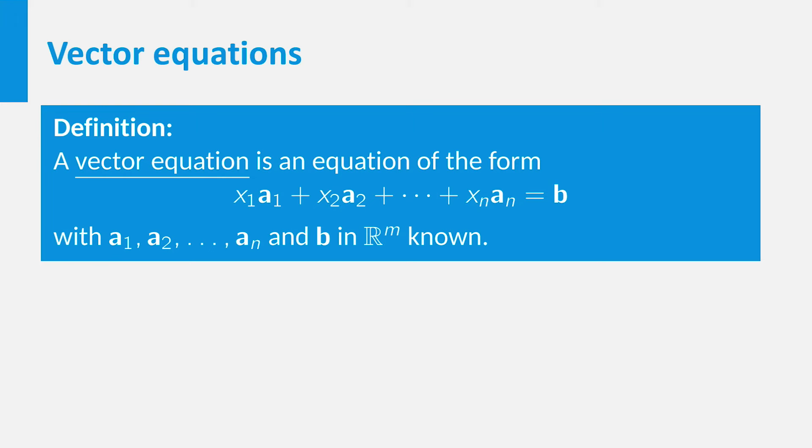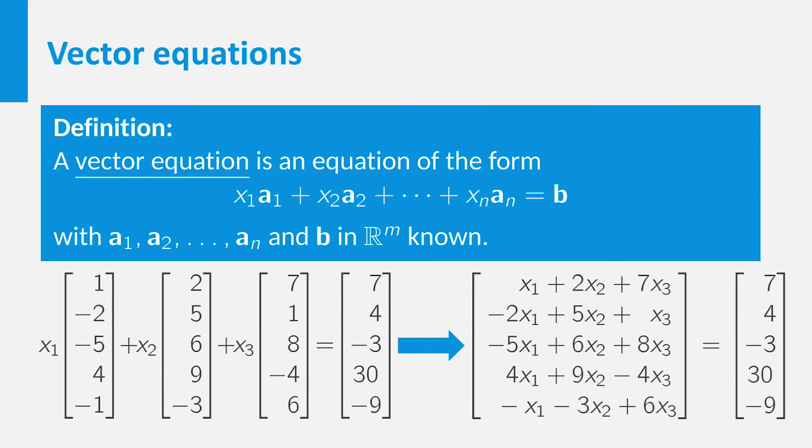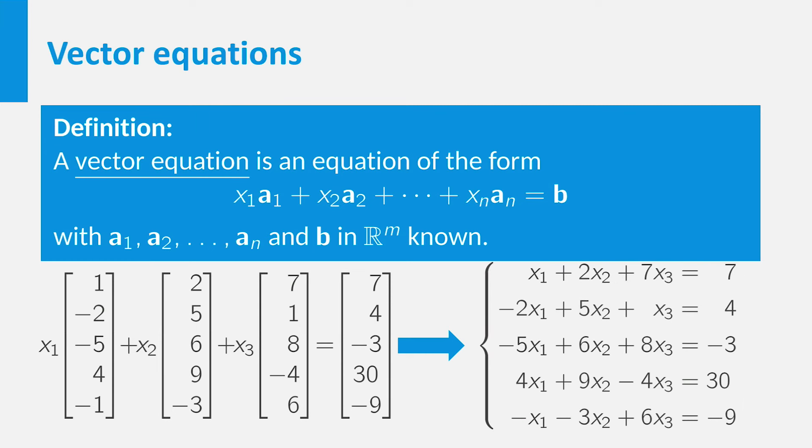As an example, take a look at this vector equation with vectors from R5. Again we can use scalar multiplication and vector addition to write the vector equation like this. Now the two vectors from R5 can only be equal if all entries are equal, which results in this linear system with five equations in three unknowns.